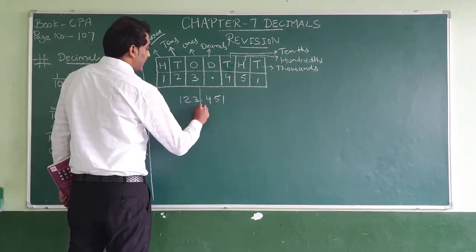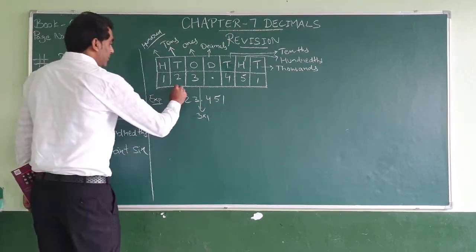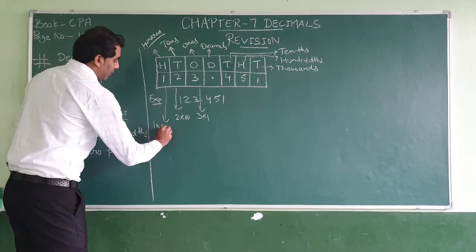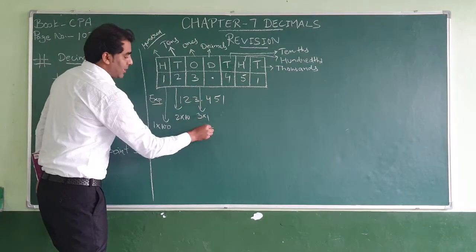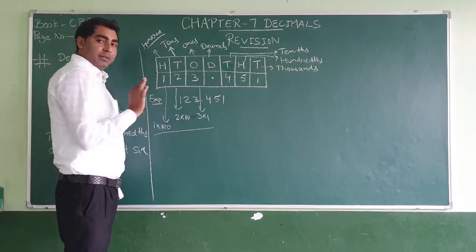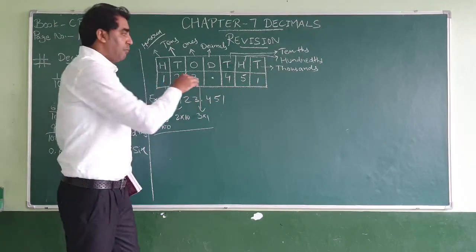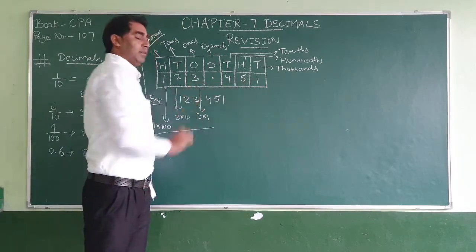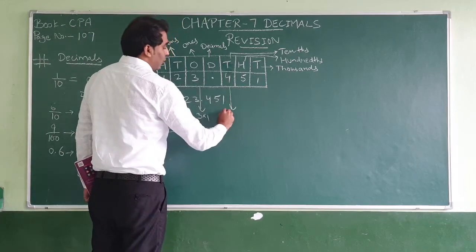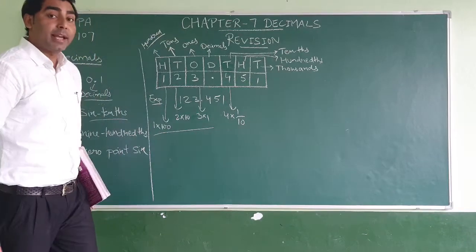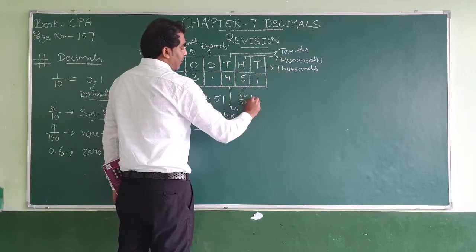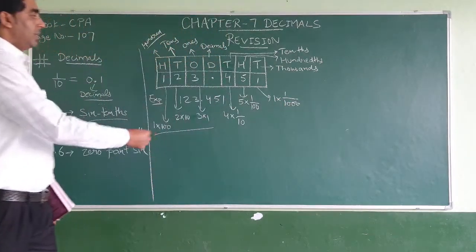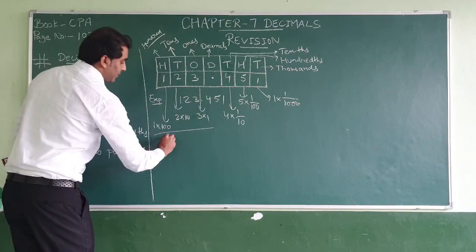This is the expanded form — the main thing. So 1 is in hundreds place meaning 1 × 100, 2 is in tens meaning 2 × 10, 3 is in ones meaning 3 × 1. After the point: 4 means 4 × 1/10, 5 means 5 × 1/100, and 1 means 1 × 1/1000. This is the expanded form.